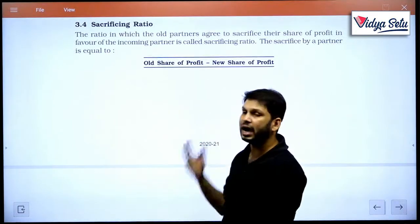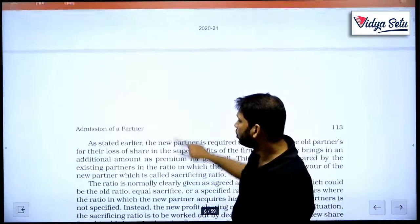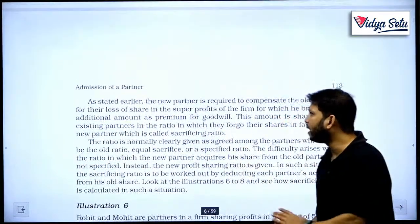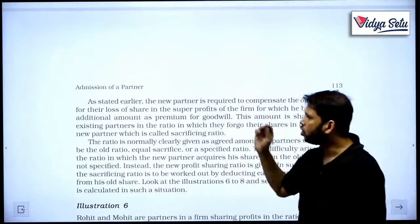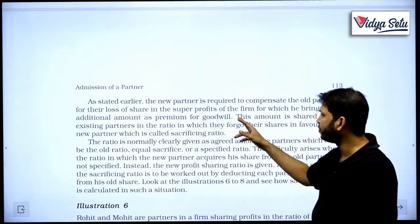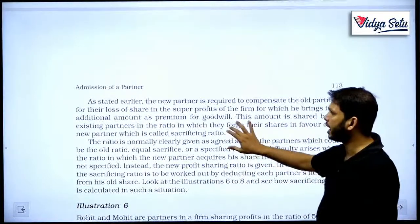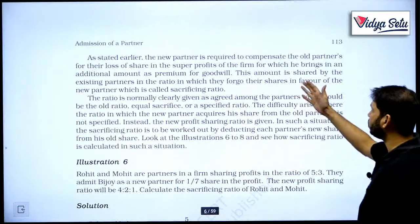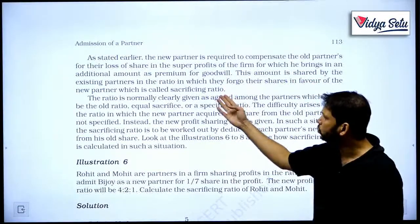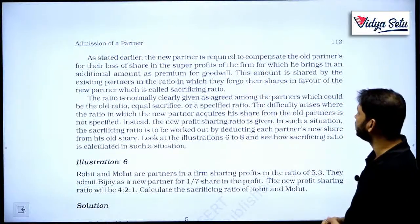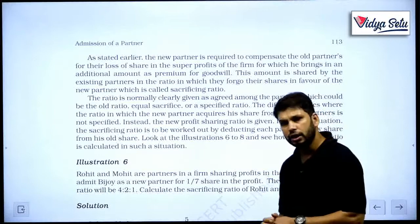If there is any difference between old and new, that is sacrifice that he made. As stated earlier, the new partner is required to compensate the old partners for the loss of share in the super profit of the firm, for which they are bringing in an additional amount as premium for goodwill. This amount is shared by the existing partners in the ratio in which they forgo their shares in favor of the new partner, which is called sacrificing ratio.